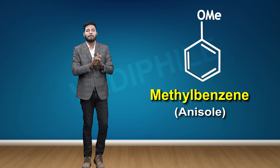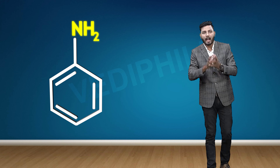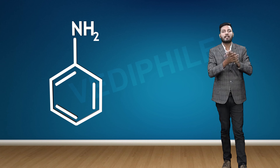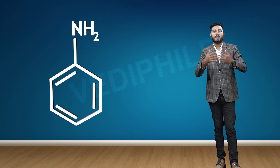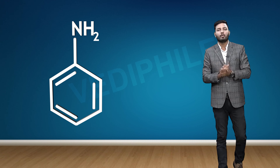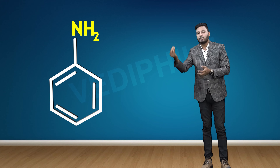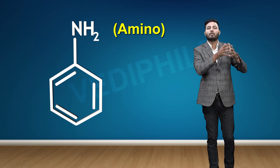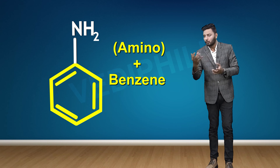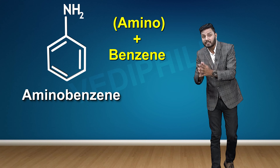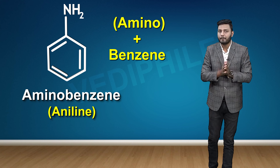In the next example, benzene has an NH2 group present on it. If you remember, we had seen this molecule earlier when studying classification of compounds. The IUPAC name: NH2 as a prefix is called amino, so the compound is aminobenzene. Its common name is aniline, which we also studied in the classification chapter.